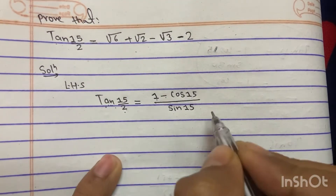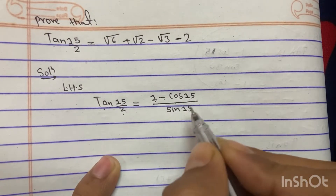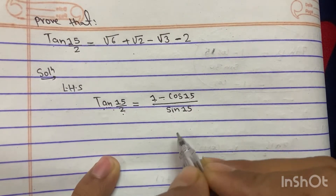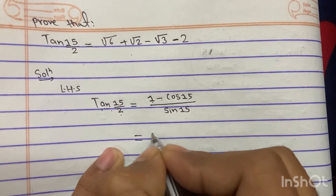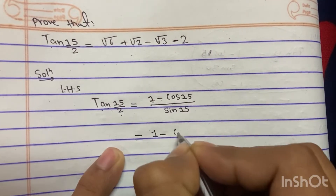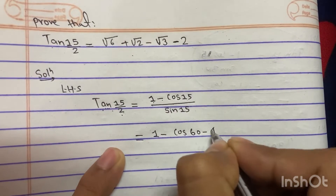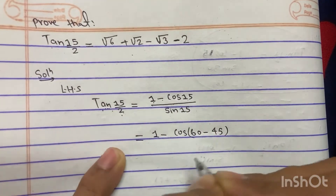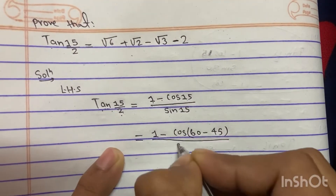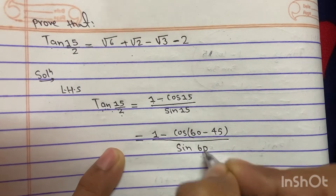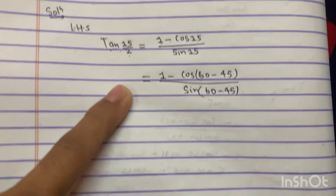Since we don't know the value of cos 15 directly, we change cos 15 and sin 15 into standard values. So cos 15 can be written as cos(60 minus 45), because 60 minus 45 is 15. Similarly, sin 15 can be written as sin(60 minus 45). Now it seems easier.